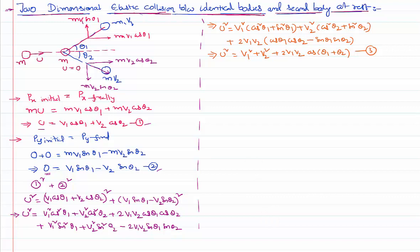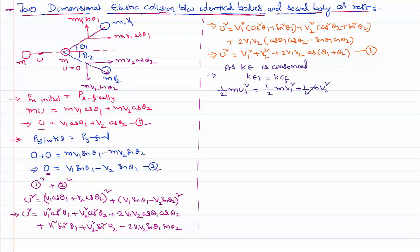Until now we used only conservation of momentum. Since this is an elastic collision, kinetic energy is also conserved. Kinetic energy initial equals kinetic energy final: ½mu² = ½mv1² + ½mv2². All the ½m terms cancel, giving us: u² = v1² + v2². Call this Equation 4.